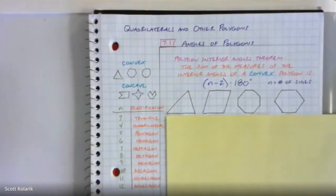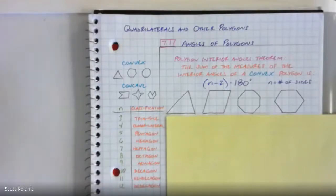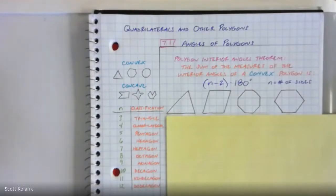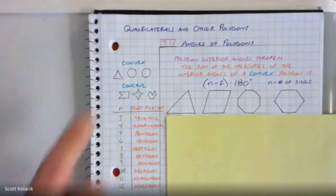Chapter 7: Quadrilaterals and Other Polygons. This is going to be the first of several geometry units in Math 2. As with all these chapters, it's going to be pretty heavy on key terms and terminology. Geometry is a Greek mathematical science, so a lot of the key terms are Greek in nature and share some roots.